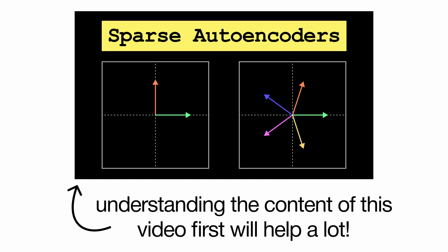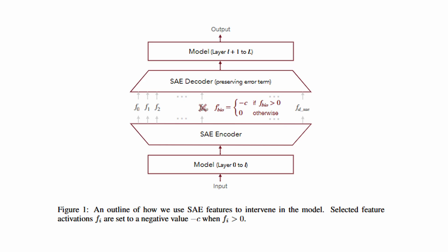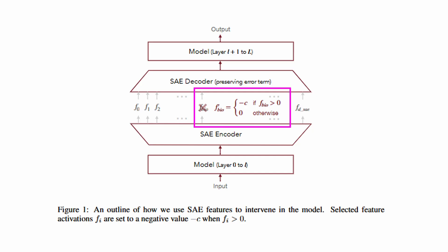If you haven't watched my previous video on SAEs, I would highly recommend you do so now so you understand the relevant concepts before you continue with the video. SAEs sit between model layers, encoding activations into sparse features and then decoding them back. When a biology-related feature activates, we can clamp it to a negative value, suppressing biology-related knowledge while leaving other capabilities intact.